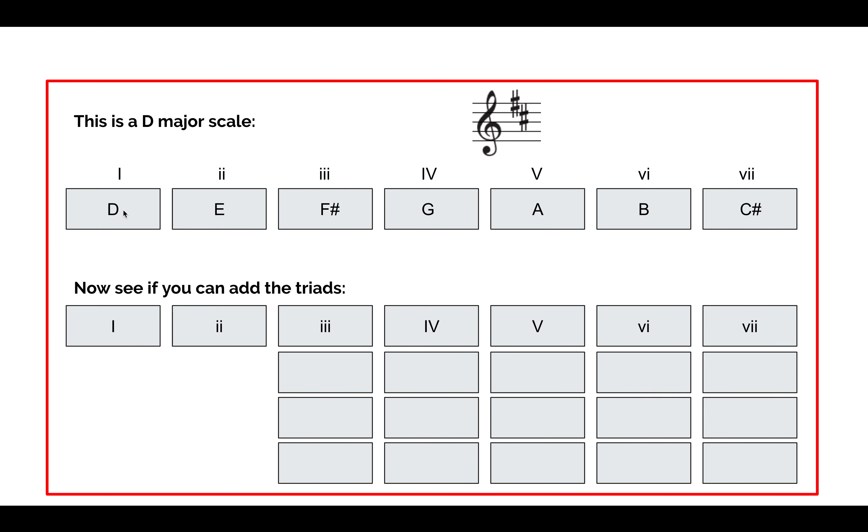Chord one is going to start on a D. Now we follow the principle. Because we've got the key already, we don't need to do very much hard work. We've done the D, we skip the E, and we get an F-sharp. We skip the G, and we get an A. So our chord one is a D, F-sharp, and A. That's our first triad.